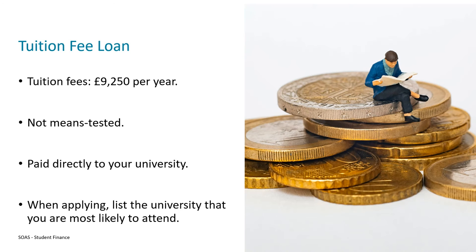Tuition fees in the UK can be up to £9,250 per year, so that's the maximum amount that a university can charge and you'll find that most universities in the UK do charge that amount. The money that you can borrow to pay the tuition fees is set at a standard rate and it's designed to cover the total of the tuition fee. You have to apply for this each year that you're attending university, but whenever you make that application it's always to cover the full amount. This isn't means tested, so there aren't certain criteria you have to meet — everyone who wants to is able to apply for the tuition fee loan.